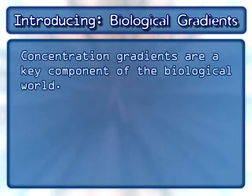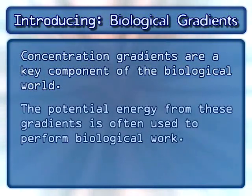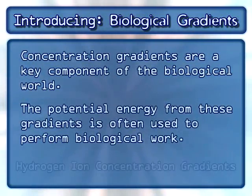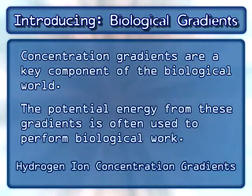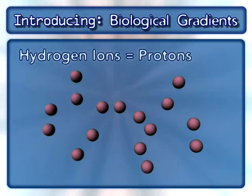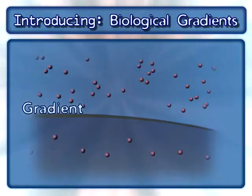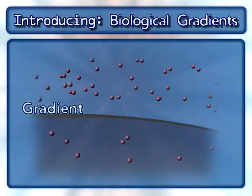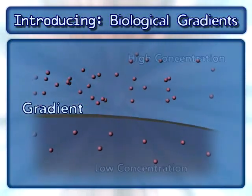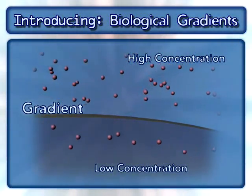Concentration gradients are a key component of the biological world. The potential energy from these gradients is often used to perform biological work. Here we will focus on hydrogen ion concentration gradients. Hydrogen ions are also known as protons. A gradient exists when there is a higher concentration of a molecule in one compartment compared to a neighboring compartment.